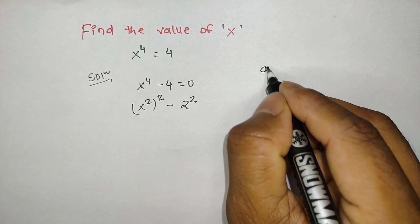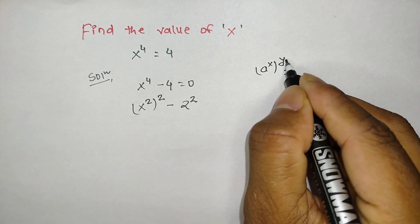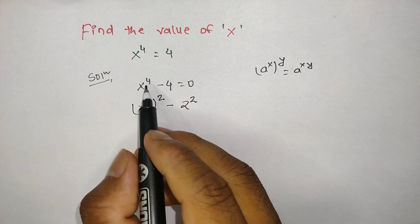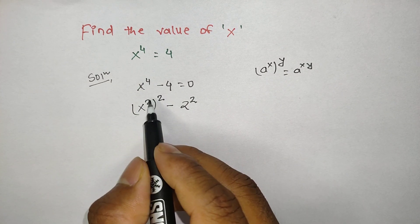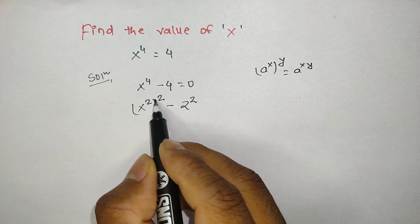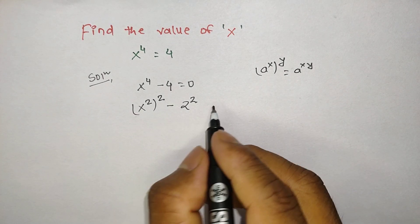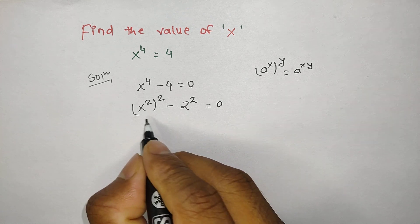According to the power rule, if we have a power x to the whole power y, we can multiply these two exponents, that is a power x times y. Here, same thing we can do. 4 is the multiple of 2 times 2, so we can write 2 times 2, 2 to the whole power 2, in the same format of a power x to the whole power y, equals zero.